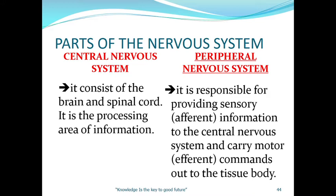The peripheral nervous system is responsible for providing sensory — which is afferent information — to the central nervous system, and carries motor commands, which is efferent, out to the body tissue. So under the peripheral nervous system, afferent is the information going to the central nervous system — the input processed by the brain. The brain then dictates the reaction.